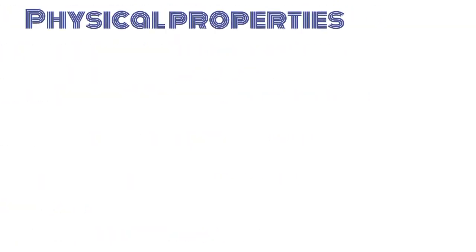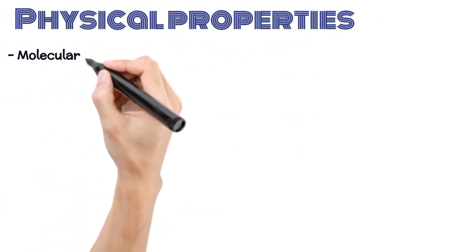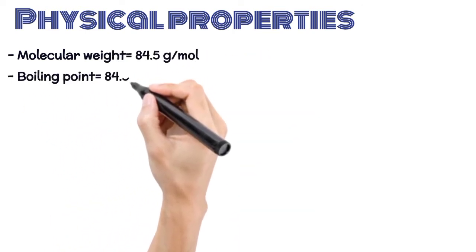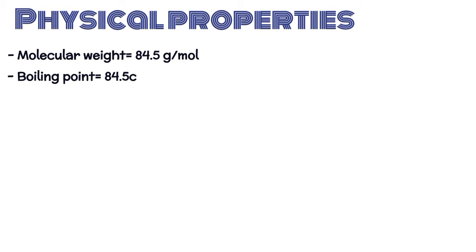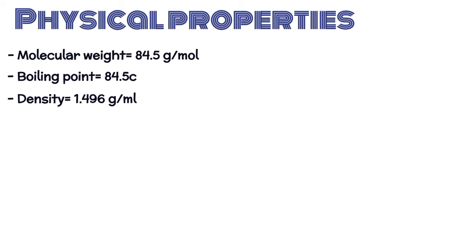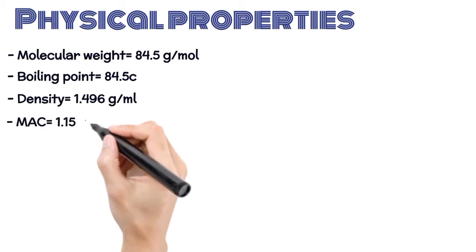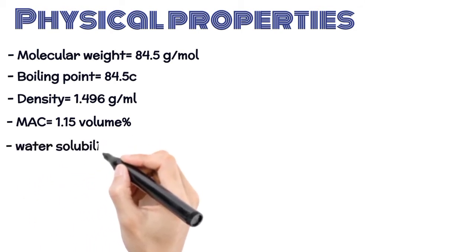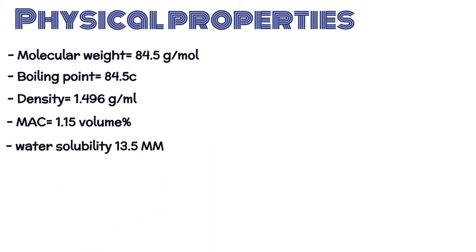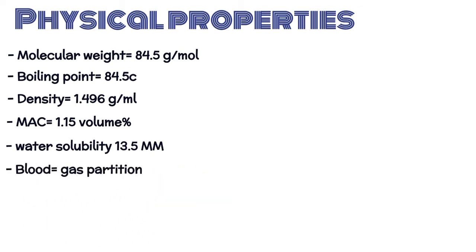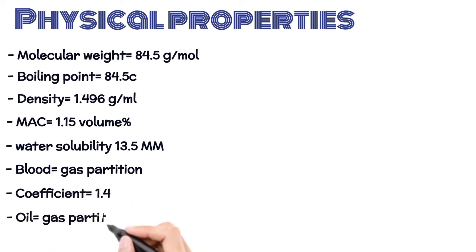Physical properties: Molecular weight 84.5 g/mol. Boiling point at 1 atm: 84°C. Density at 25°C: 1.496 g/ml. MAC: 1.15 volume percent. Water solubility: 13.5 mm at 25°C. Blood-gas partition coefficient: 1.4. Oil-gas partition coefficient: 98.